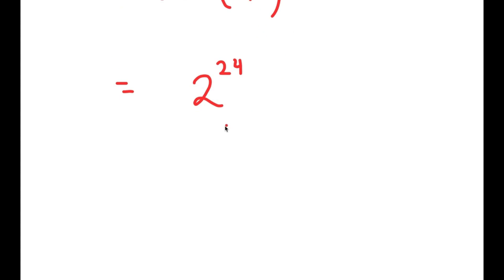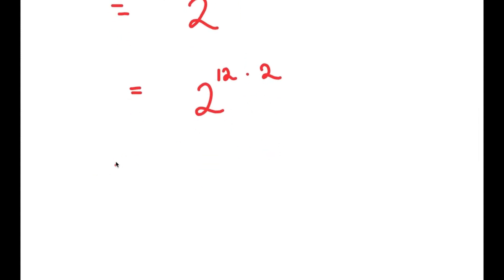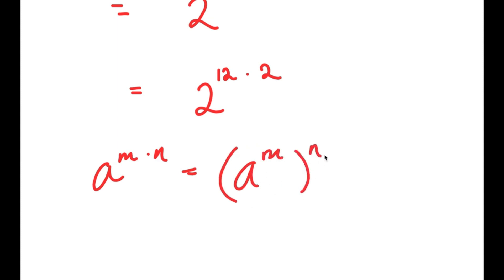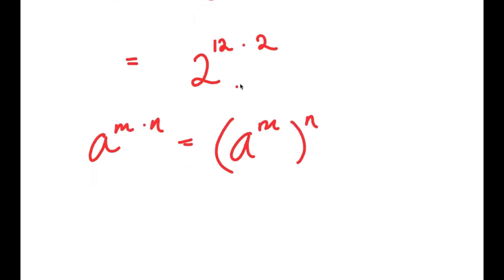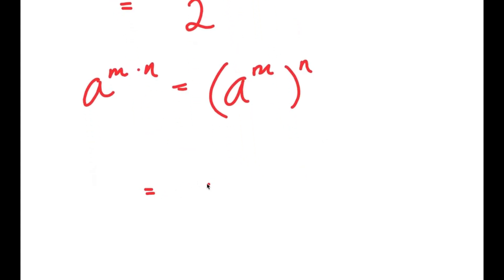From here, I'm going to write this as 2 to the power of 12 times 2. The reason I did this is because I can now use the property a to the power of m times n equals a to the power of m to the power of n. So 2 to the power of 12 times 2 is equal to 2 to the power of 12, to the power of 2.